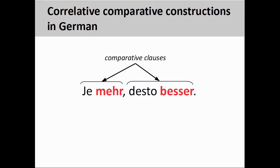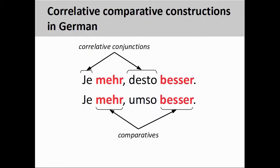German also employs a similar correlative comparative construction consisting of two parallel comparative clauses, which also express a proportional dependence between the notions expressed in the clauses. Whereas English uses the adverbial 'the' with the comparative form of an adjective or adverb, German relies on the paired correlative conjunctions 'je...desto' to do the same. German can also use the paired construction 'je...umso' to express the same proportional relationship. For example, 'je mehr ich lerne, desto besser sind meine Noten' could express a relationship between studying and grades.